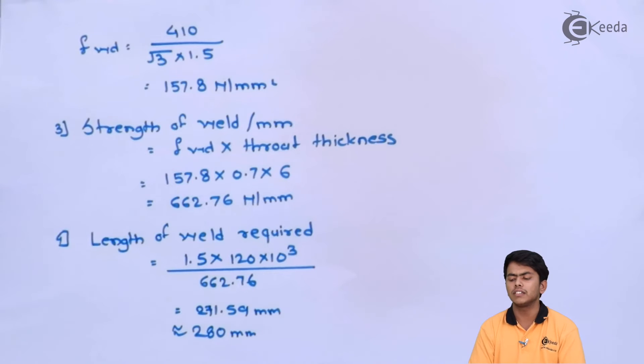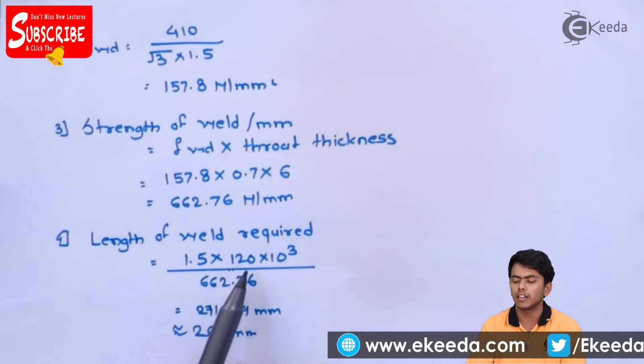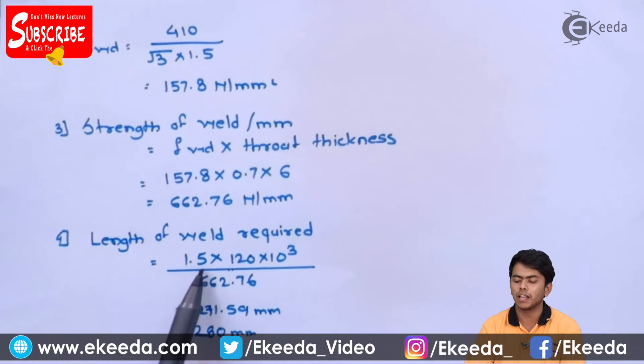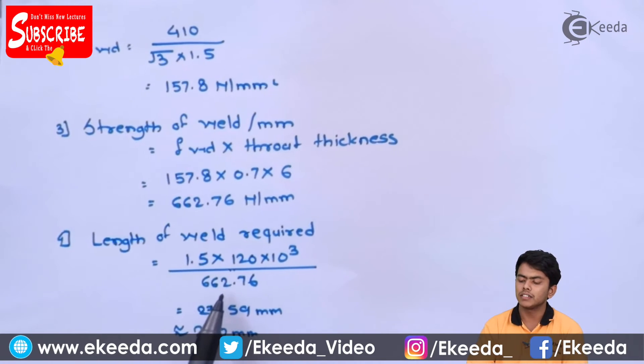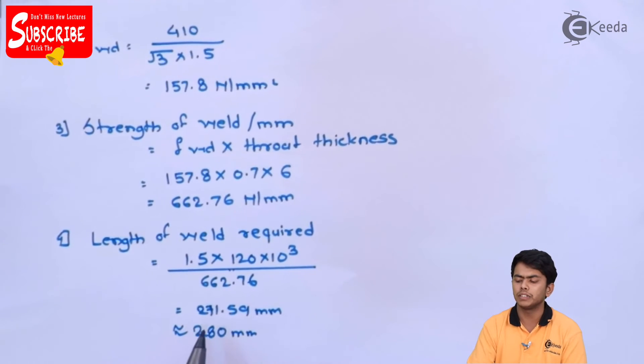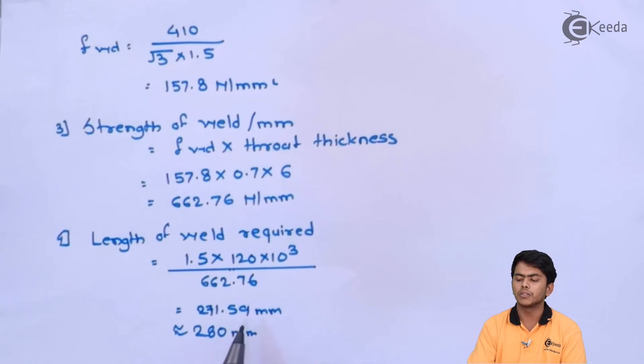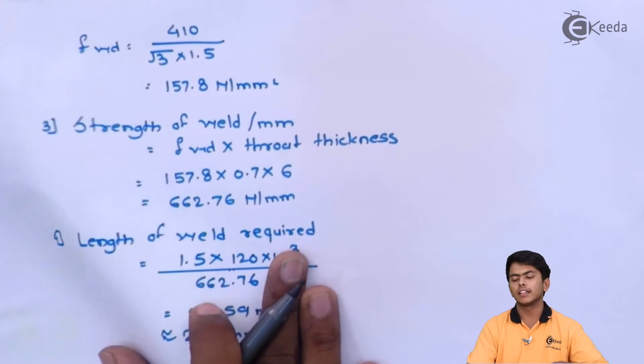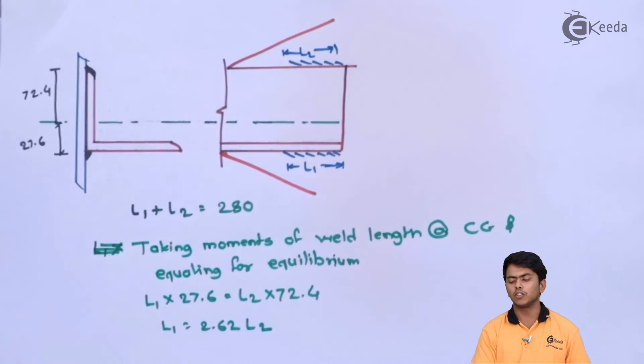Now we have to find the length of weld required, which is the factored load divided by the strength of weld per mm. We have given 120 that was working, so we multiply it by 1.5 to convert to factored load. So 1.5 into 120 into 10³ N divided by 662.76, we will get 271.59 mm, so we will round off to 280 mm.